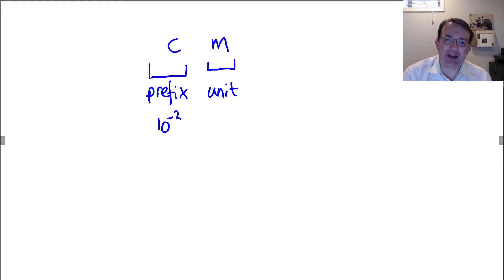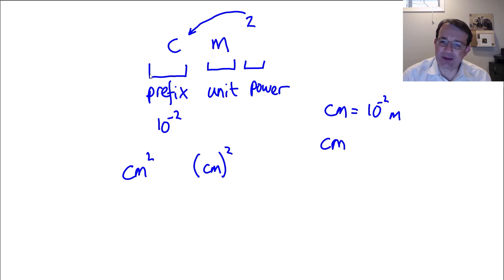The centi prefix is 10 to the minus 2, and that's why there's a hundred centimeters in a meter. The second part here is the unit itself. So for centimeters we have one hundredth of the unit of length which is the meter. The other thing that can go here is we could have a power, so this would be centimeters squared. The key thing to remember with the powers is that they apply to the prefix as well. When we write centimeters squared, what we mean is centimeters in brackets squared. So while a centimeter is equal to 10 to the minus 2 meters, a centimeter squared is equal to 10 to the minus 4 meters squared because we have squared the prefix, the 10 to the minus 2, as well as squaring the unit, the meter.